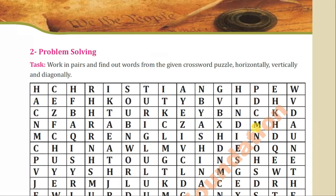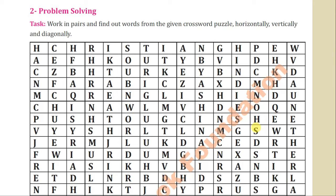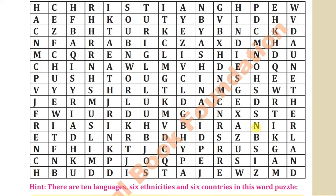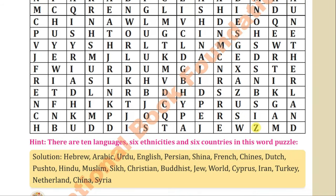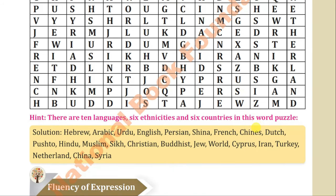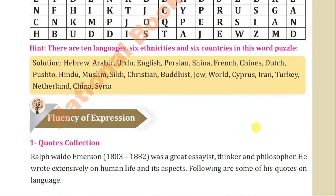Now come to page 59. This is a very interesting activity: work in pairs and find words from the given crossword puzzle horizontally, vertically, and diagonally. There are 10 languages, 6 ethnicities, and 6 countries in this word puzzle. The words include: Hebrew, Arabic, Urdu, English, Persian, Shina, French, Chinese, Dutch, Pashto, Hindu, Muslim, Sikh, Christian, Buddhist, Jew, World, Cyprus, Iran, Turkey, Netherlands, China, and Syria. You have to find these words in the puzzle — the solution is also given but attempt it yourself first.